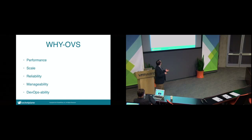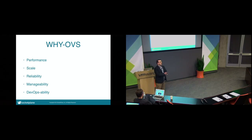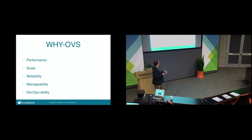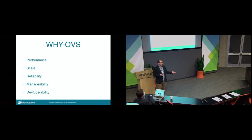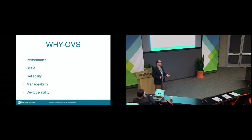We'll cover each of these in depth. Performance is definitely good, especially since 2.1 we're seeing really great performance in OVS. At scale, it's number one deployed in OpenStack. Reliability also comes from OpenStack. Manageability — OVSDB — we've got a talk on that tomorrow. And DevOps ability: as a networking guy who used to work on Cisco and HP boxes, no switching solution today has had as rich a tool set as Open vSwitch. I can pull information about flow tables, configuration state. It's really easy to use, easy to script, very easy to automate.